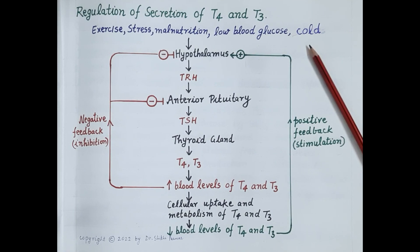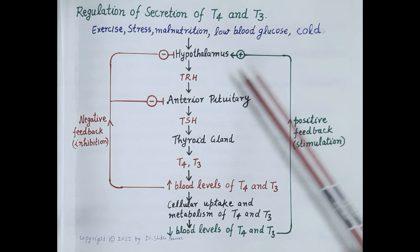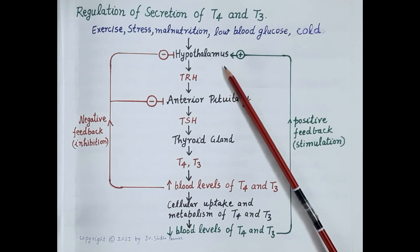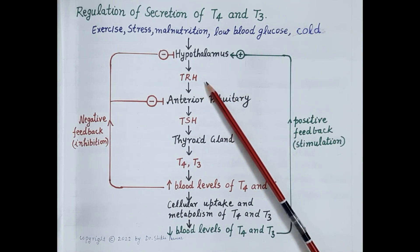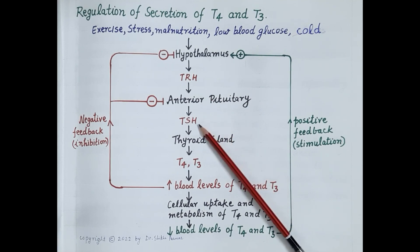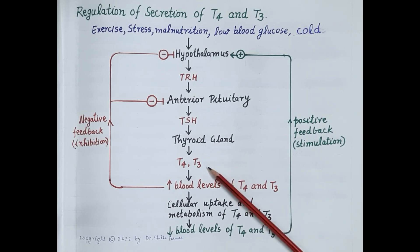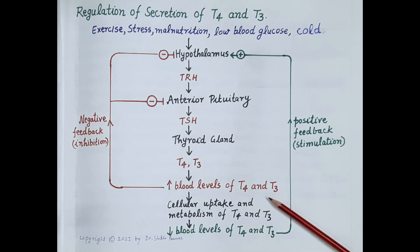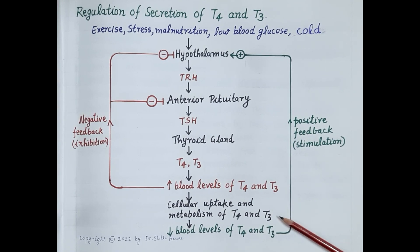Secretion of TRH is stimulated by factors like exercise, stress, malnutrition, low blood glucose, exposure to cold, etc. These factors stimulate the hypothalamus to release TRH, which further stimulates the anterior pituitary to release TSH, which further stimulates the thyroid gland to release T3 and T4, increasing their blood levels. T3 and T4 are then utilized by body cells, which reduces their blood levels again.